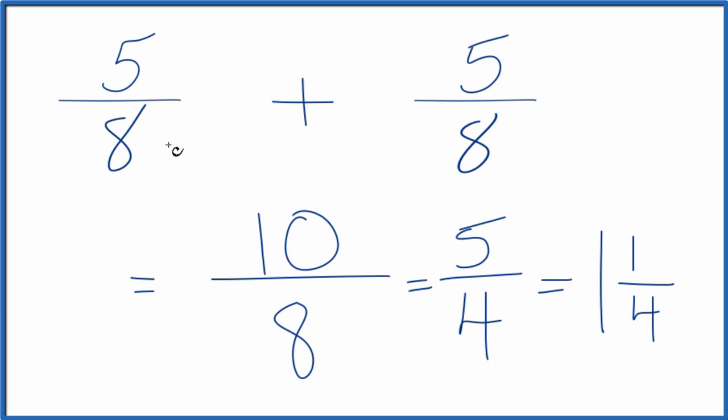Either way, when you add 5 eighths plus 5 eighths, you get 10 eighths. You could simplify that to 5 fourths, and if you wanted, you could write it as a mixed number 1 and 1 fourth.